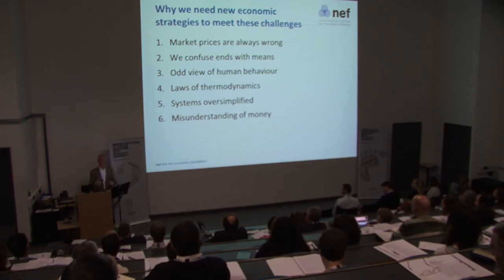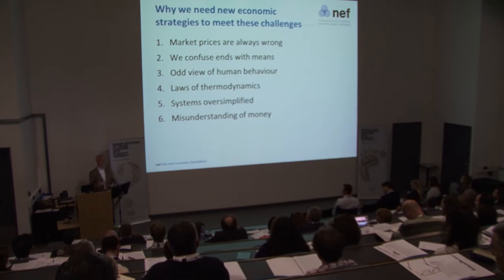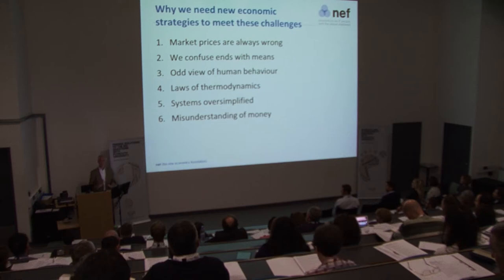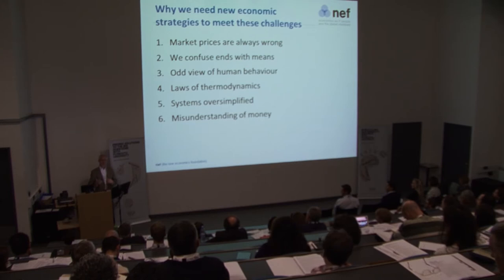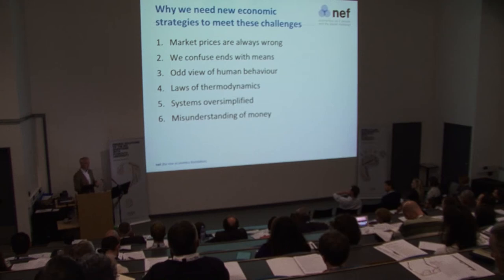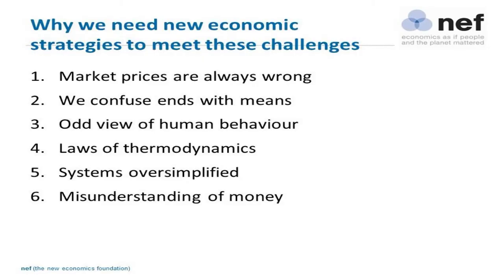Systems are oversimplified. In order to construct neat mathematical models of the economy, you have to assume it's much simpler than it is. Nothing wrong with that — all models can tell us something — but in policy making, the Treasury's macroeconomic model is often considered to be much more of a model of what's going on than in reality it actually is.